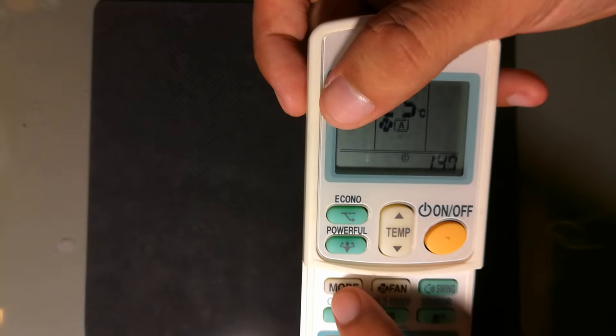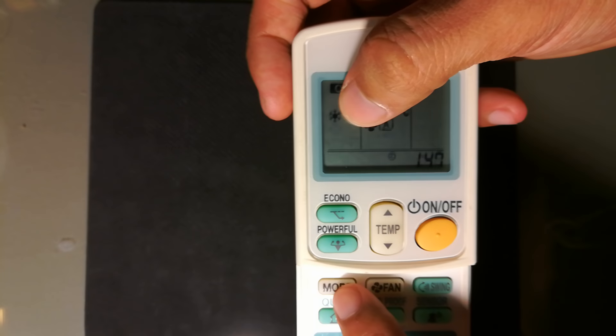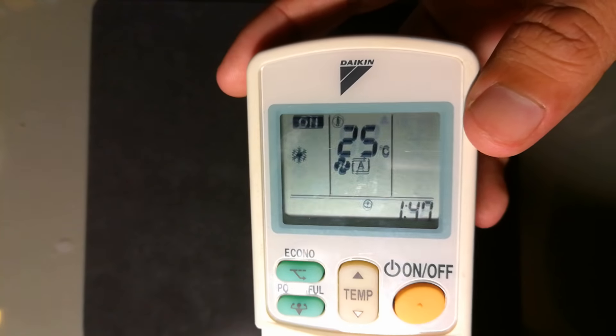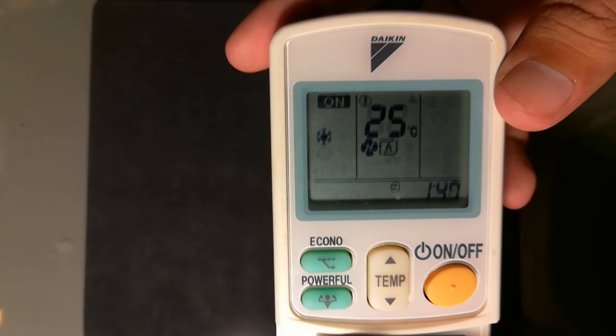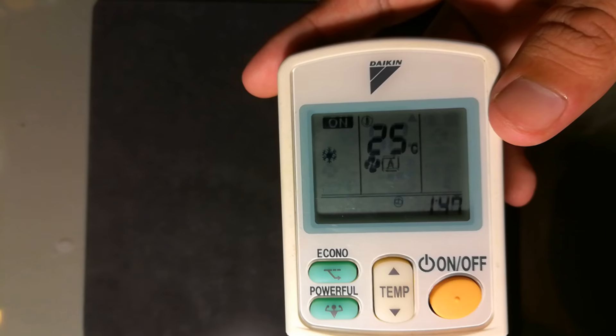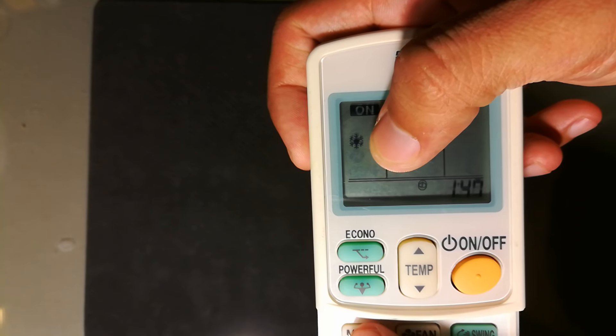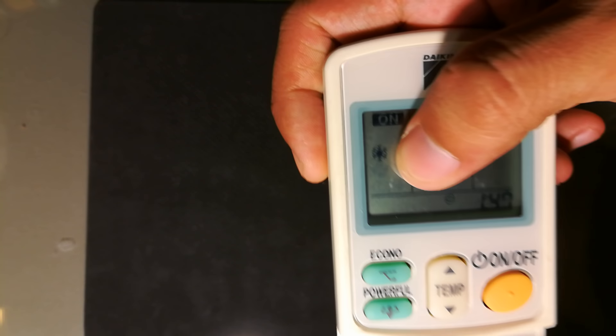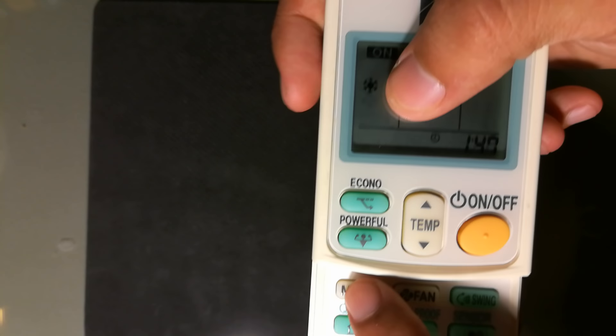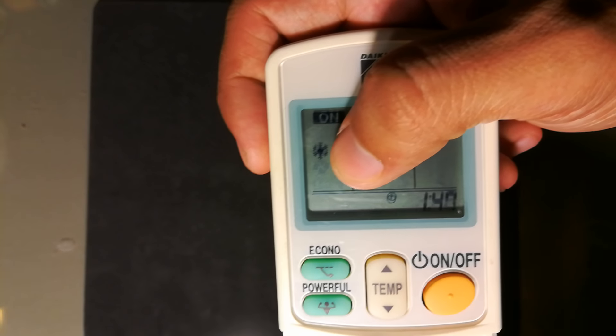The ice logo means cool mode. Cool mode is used to cool down your room temperature. Most air conditioners recommend using this ice logo for cool mode. Other brands may have text on the remote instead.